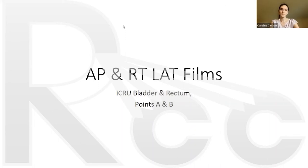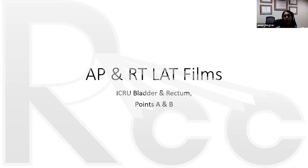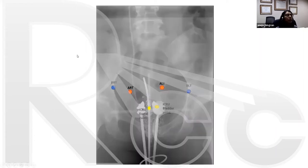We're going to start off with film-based brachytherapy, because I know that's what I was asked to talk about. We are moving away from film-based, but a lot of people still do it — especially in Africa because it's low resource and easy to do. With film-based you take an AP and a lateral film and you look at points: Point A, Point B, bladder, and rectum.